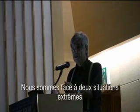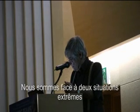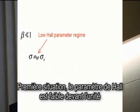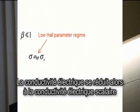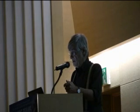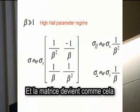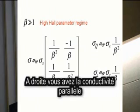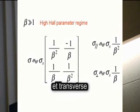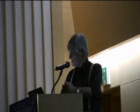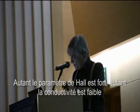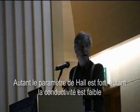There are two extreme situations. In the first, the Hall parameter is very small and the electrical conductivity is very close to the scalar value. In the other case, we consider large Hall parameters. As you can see, the parallel electrical conductivity and the transverse electrical conductivity are both reduced — the larger the Hall parameter, the smaller the conductivity.